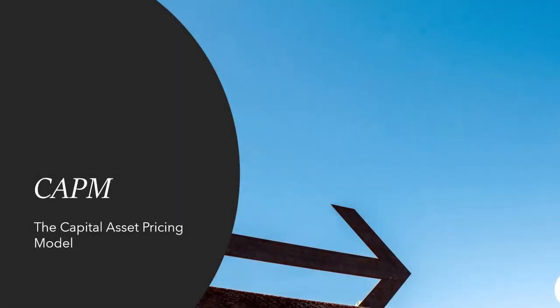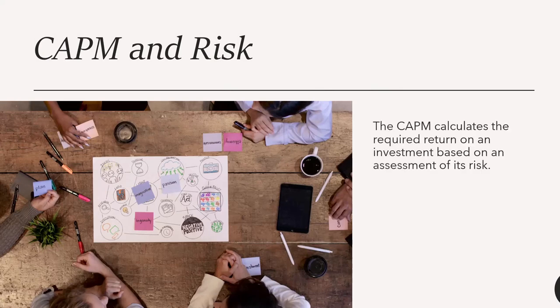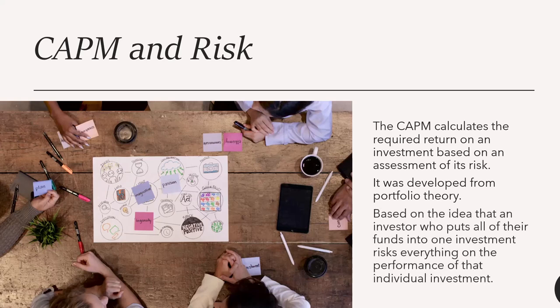This is an explanation of the Capital Asset Pricing Model. Let's look at CAPM and risk. The CAPM model calculates the required return on an investment based on an assessment of its risk. It was developed from portfolio theory, based on the idea that an investor who puts all of their funds into one investment risks everything on the performance of that individual investment.